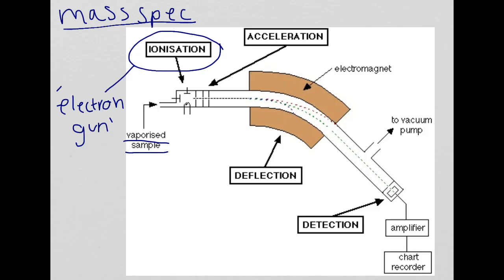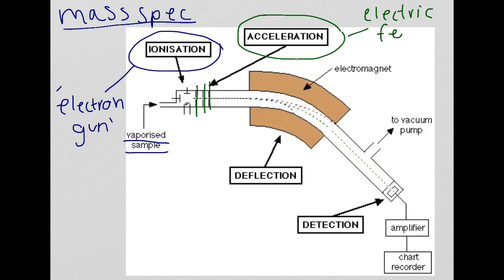The next stage is acceleration. What happens at this stage is the positive ions are attracted towards a negatively charged plate. Some of the plates have slits in, so some of the ions pass through the slits, which forms a beam-like formation. What to remember here is electric field and the negatively charged plates.